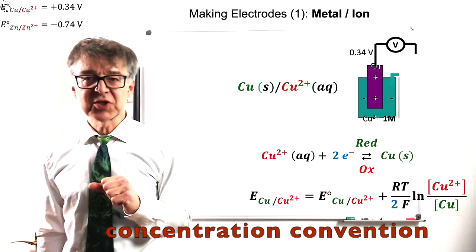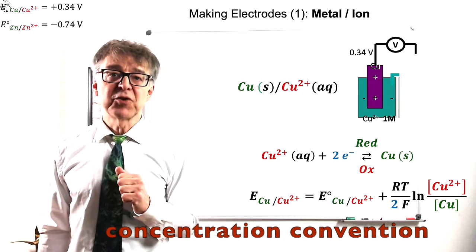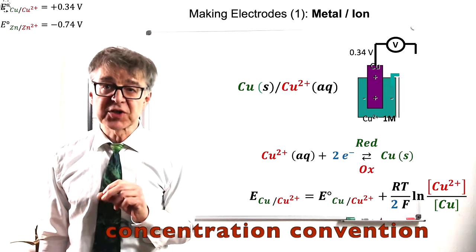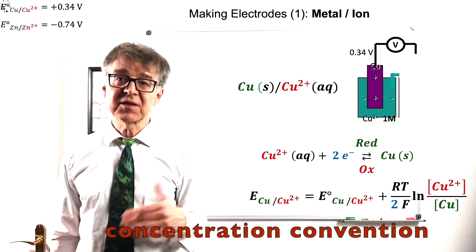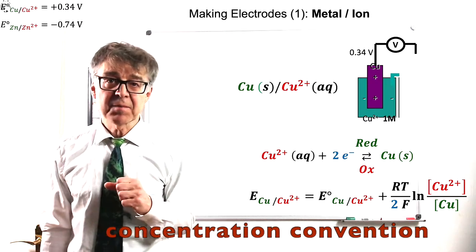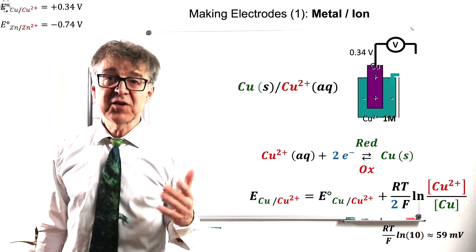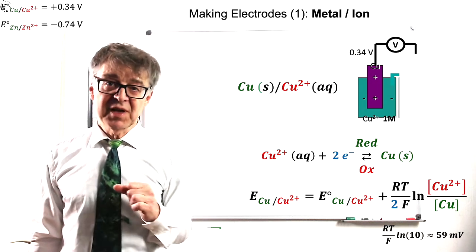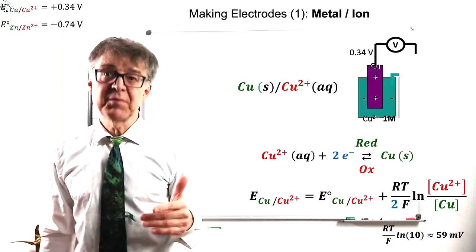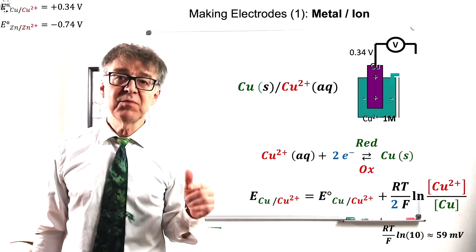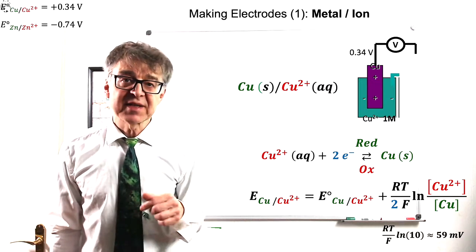According to the concentration conventions in thermodynamics, solid and liquid species have to be quantified with their mole fraction, gaseous species with their partial pressure in bar and dissolved species with their molarity. The Nernst factor RT over F times logarithm of 10 corresponds to approximately 59 mV. So, a change in potential of about 30 mV of a copper electrode means that the concentration of copper ions have changed by a tenfold.